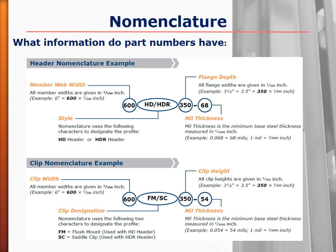The products of the Priceless Header and Quick Jam system include the HD and HDR headers, the KJS Quick Jam studs, and flush mount and saddle clips for the header-to-jam connection, as well as the cripple clip for the cripple stud-to-header connection. In the upper drawing you can see the HD header and in the lower drawing the HDR header, both including the proper clips for use with each system.